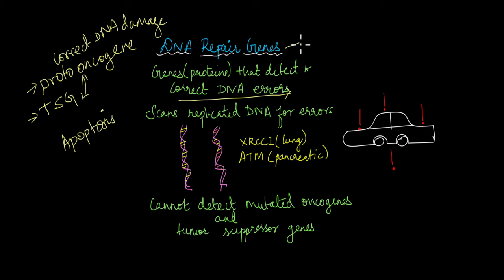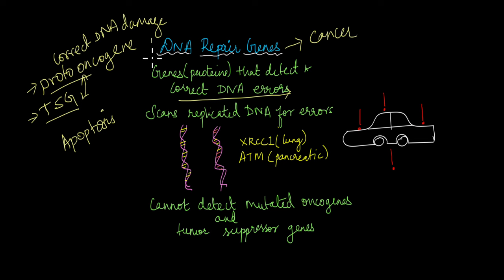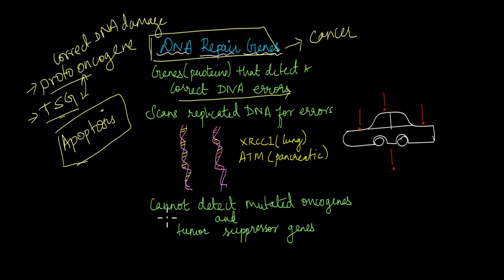But this works only to a certain extent. If the proto-oncogenes and tumour suppressor genes have mutated so much that even the DNA repair genes cannot do their job, that would again lead to cancer. And if there is a mutation in the DNA repair genes themselves, then those proteins cannot detect any mutated oncogenes or tumour suppressor genes, which would also lead to cancer.